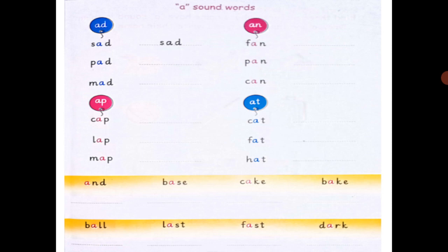Next is AN words: fan, pan, can. Next is AP words: cap, lap, map. Next is AT words: cat, fat, hat.